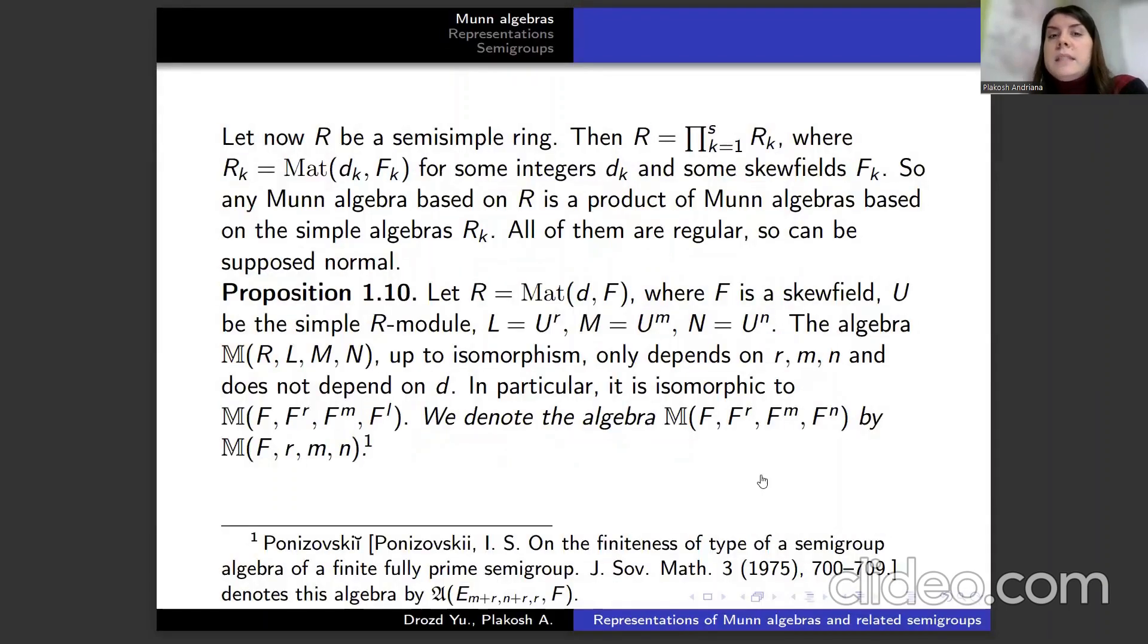Let now R be a semi-simple ring. Then R is the product where Rₖ is matrix for some integers dₖ and some skew fields Fₖ. So any Munn algebra based on R is a product of Munn algebras based on the simple algebra Rₖ. All of them are regular, so can be supposed normal.